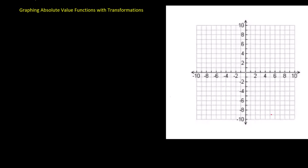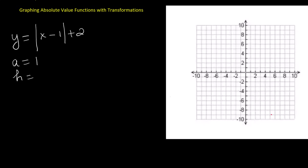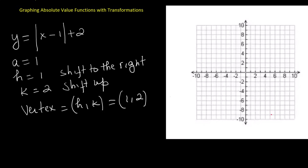Now let's see what happens when we combine a horizontal and a vertical shift. The function is y equals the absolute value of x minus 1 plus 2. In the transformation form y equals a times the absolute value of x minus h plus k, the value of a is 1, the value of h is 1, and the value of k is 2. This means the vertex is at 1 comma 2. The graph is shifted one unit to the right and two units upward from the parent function.